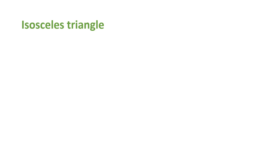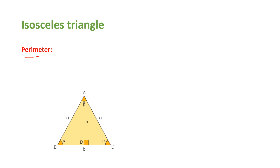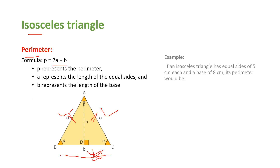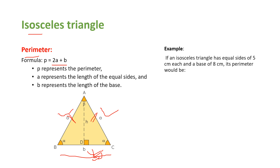Let's now do the same for an isosceles triangle. For the perimeter: an isosceles triangle has two equal sides of length a and a base of length b. So perimeter equals a plus a plus b, which is 2a plus b. For example, if the equal sides are 5 cm and the base is 8 cm, the perimeter is 2×5 + 8 = 18 cm.